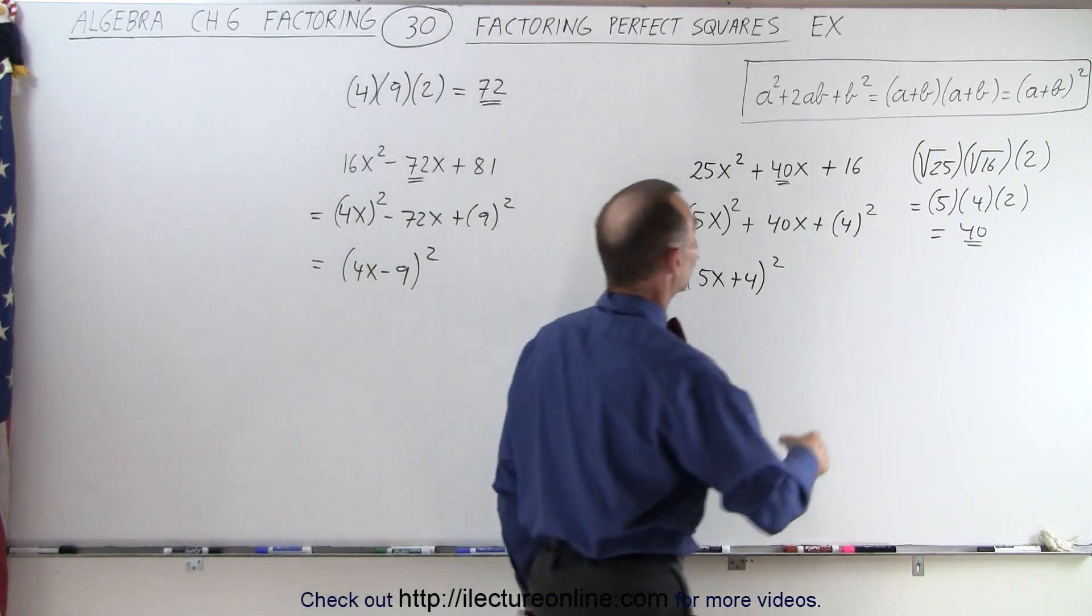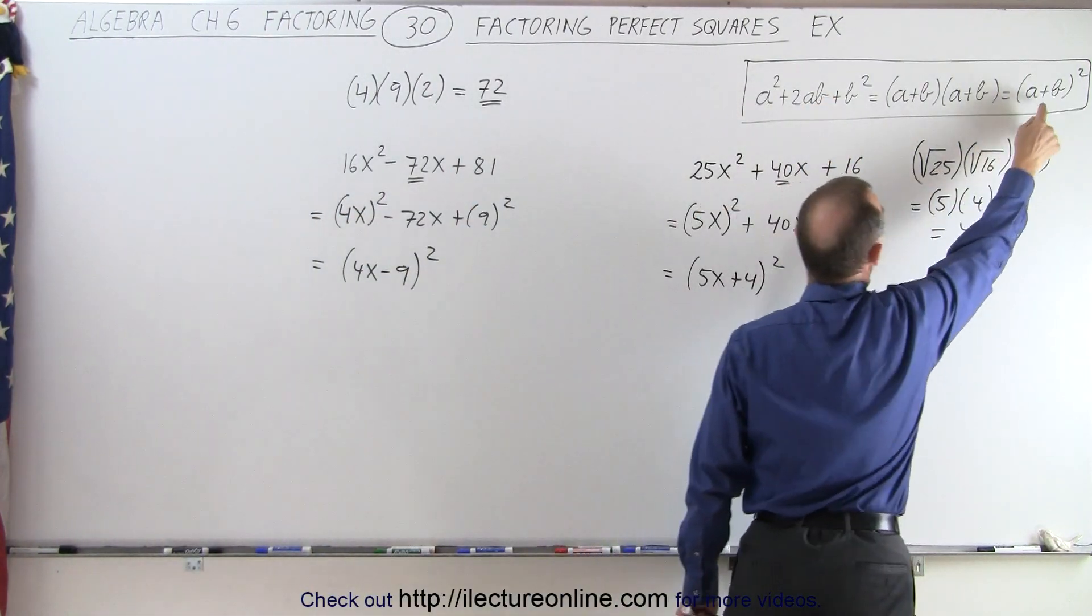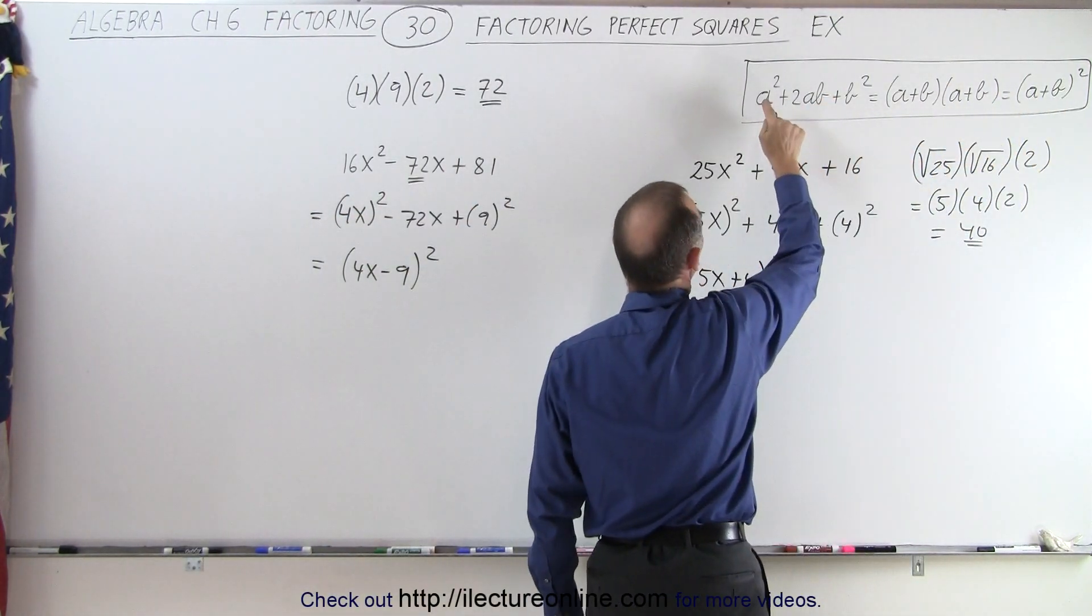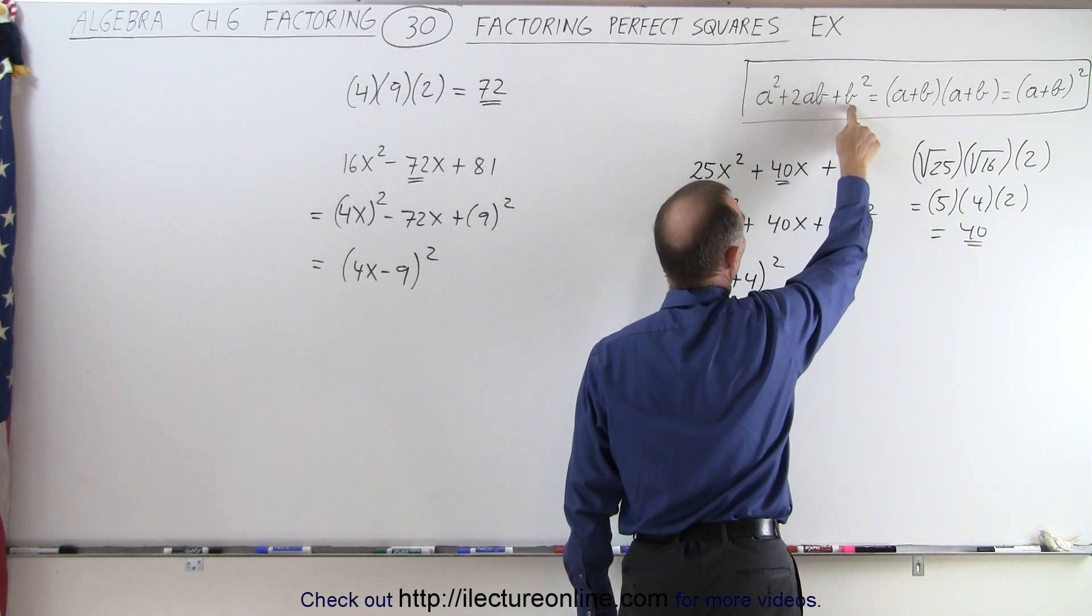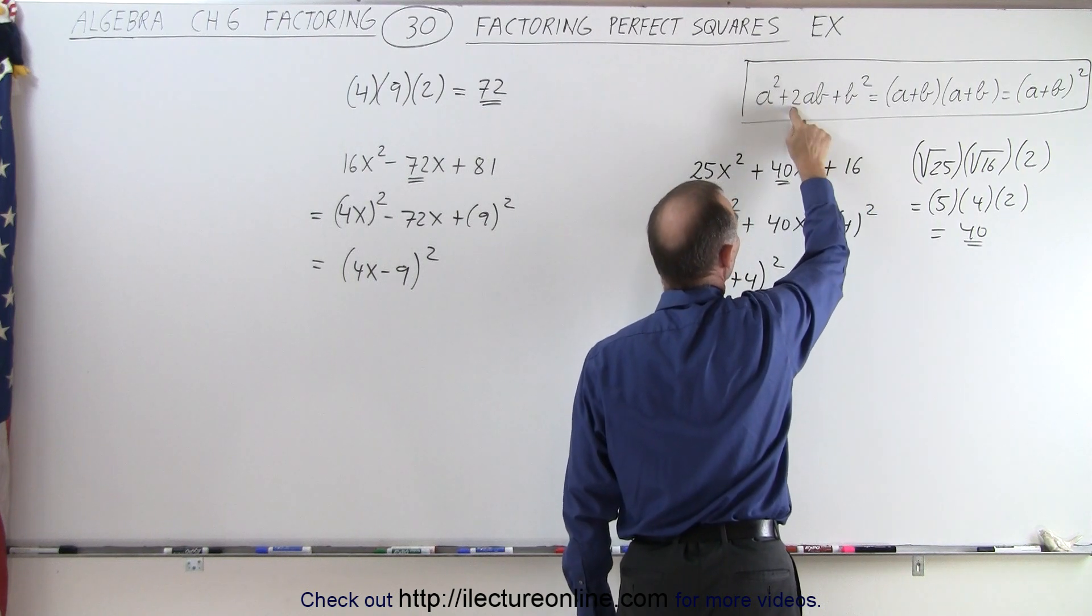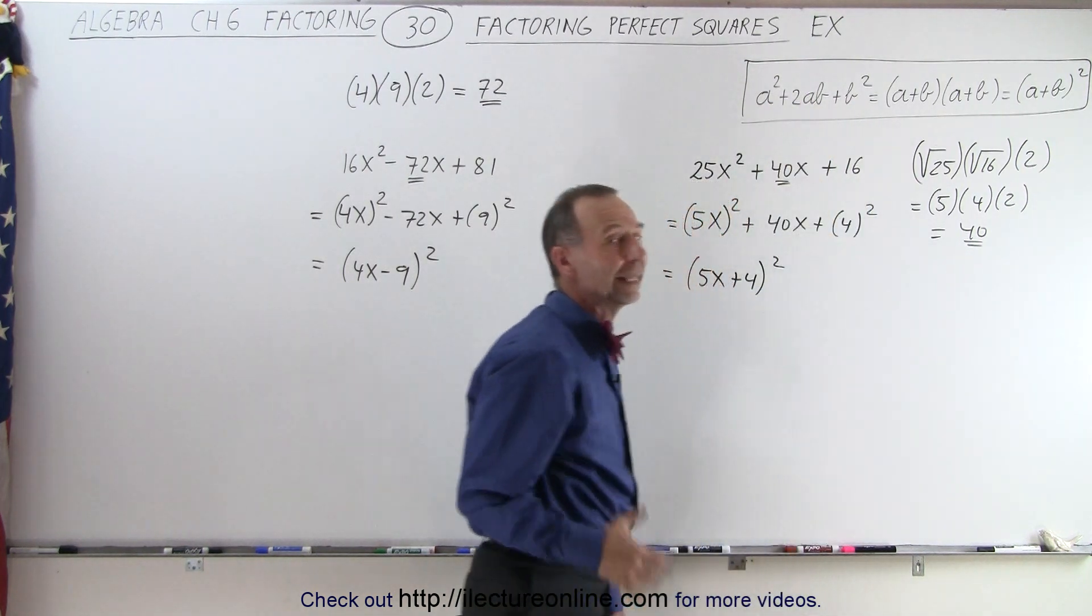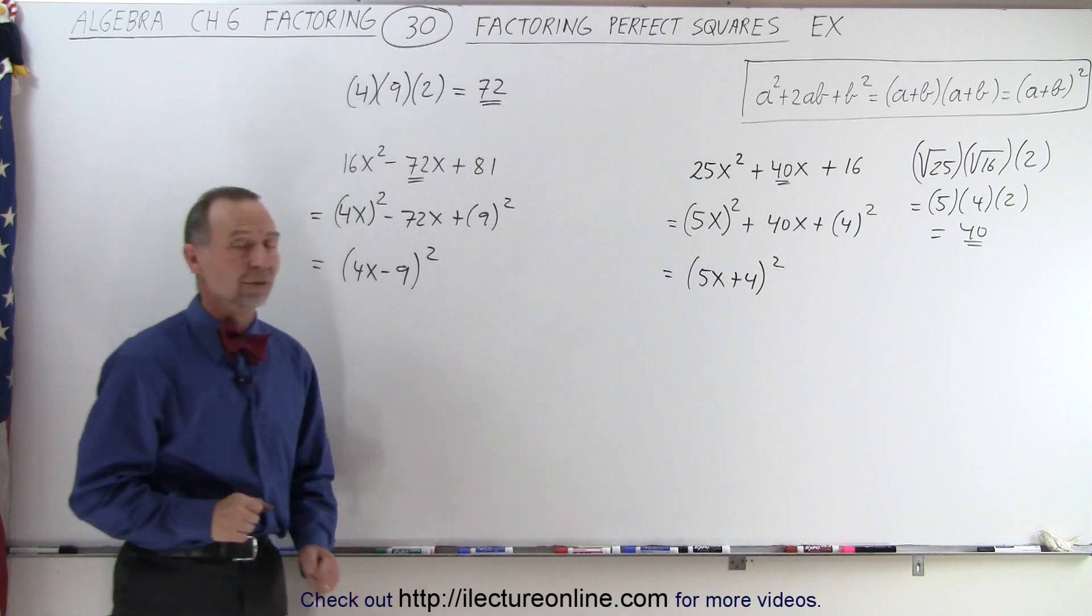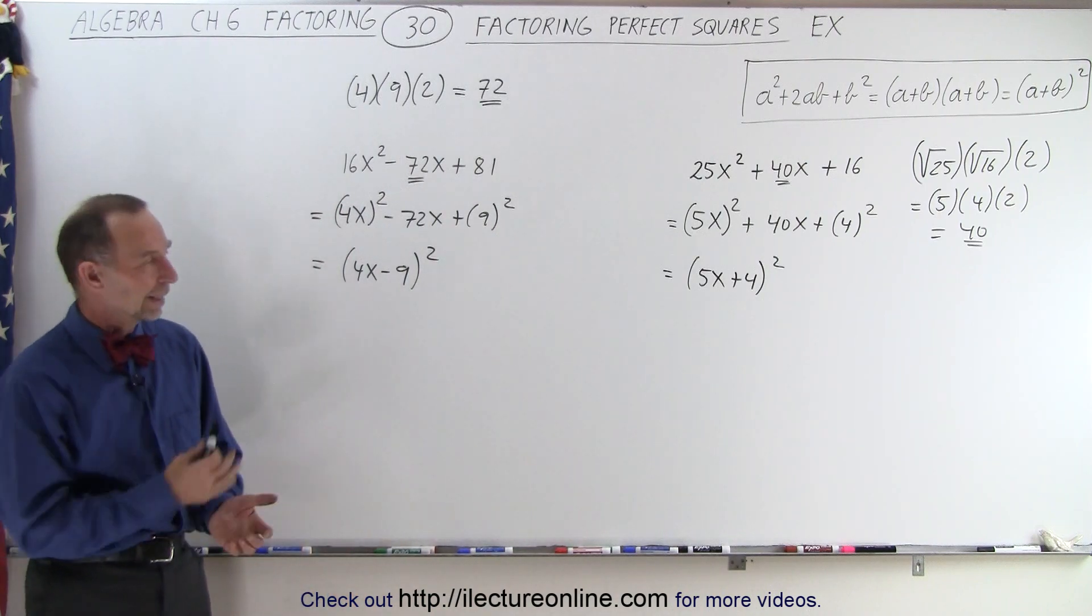In other words, you recognize that this is equal to this when we take the square root of the first term times the square root of the second term times 2, and we get the middle term. And that way we know we can factor it in this way. And that is how it's done.